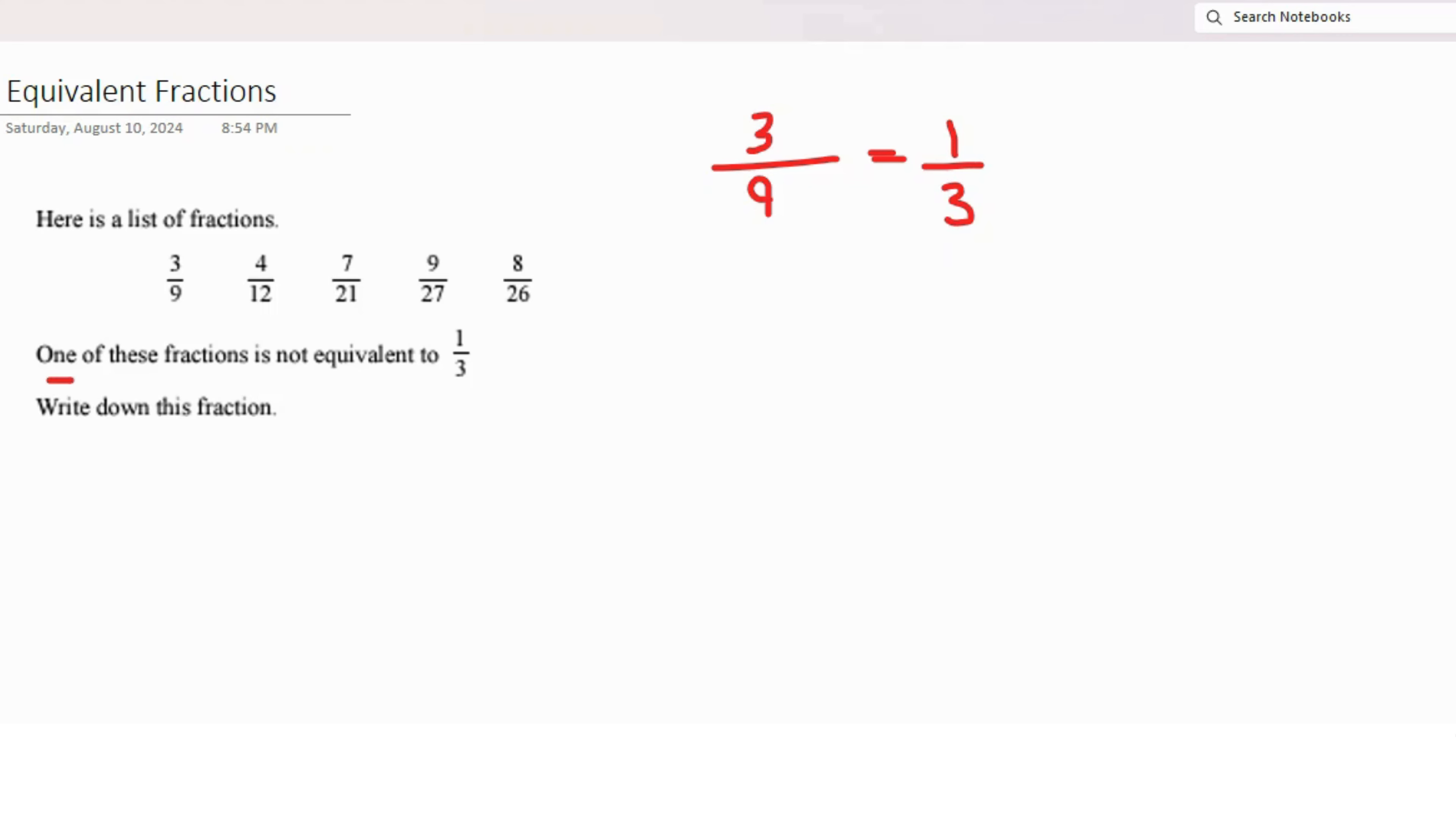All of these fractions are probably equal to 1 out of 3, but there is one that is not equal to 1 out of 3. This is what we need to find out in this question—which of these is actually not equal to 1 out of 3.